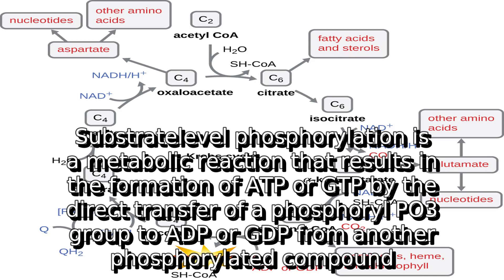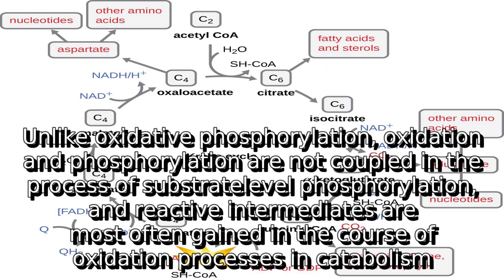Substrate-level phosphorylation is a metabolic reaction that results in the formation of ATP or GTP by the direct transfer of a phospho group to ADP or GDP from another phosphorylated compound. Unlike oxidative phosphorylation, oxidation and phosphorylation are not coupled in substrate-level phosphorylation, and reactive intermediates are most often gained in the course of oxidation processes and catabolism.